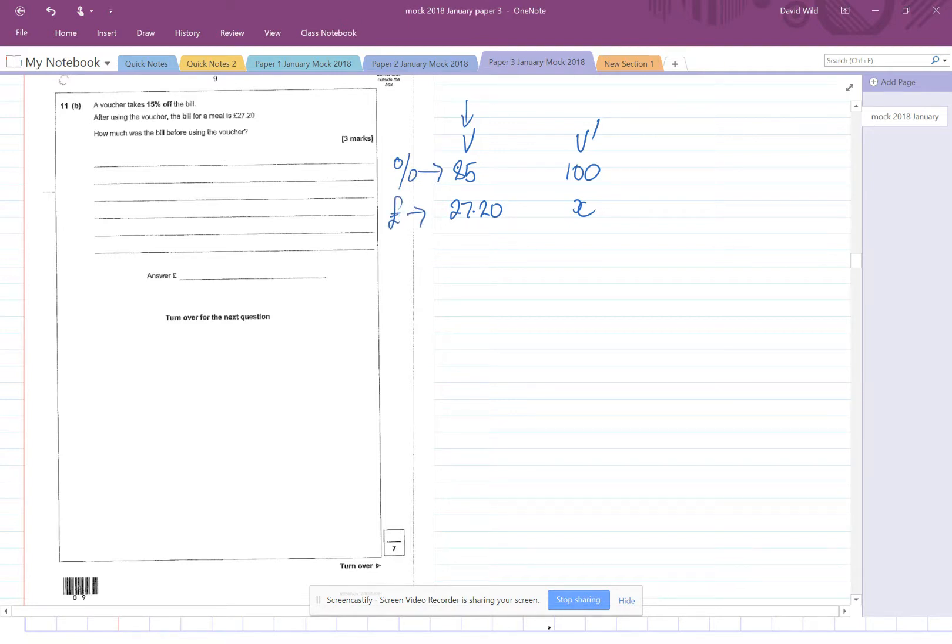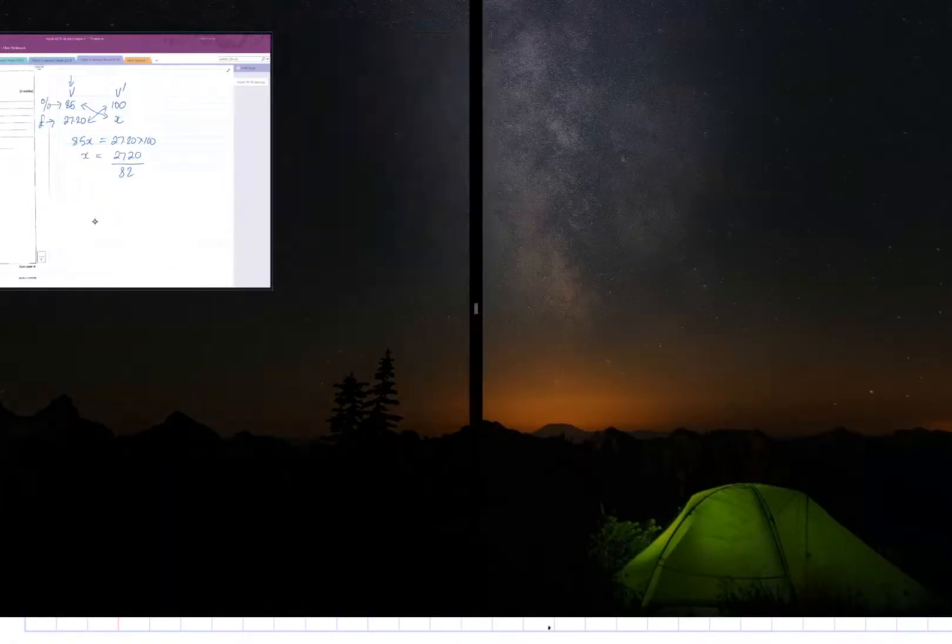And we know that ratios squares give us diagonals that are equal. So 85X equals 2720 times 100. Divide both sides by 85. Right, there's 2720 times 100, divided by 85 there. So let's get our calculator out again.